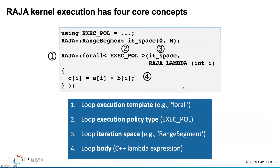The anatomy of these Raja methods has four main concepts: a loop execution template method, a loop execution policy governing how the code will be executed, an iteration space corresponding to what the loop will traverse over, and finally the loop body, which is encapsulated inside a C++ lambda expression.